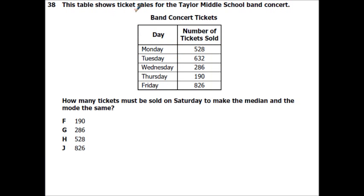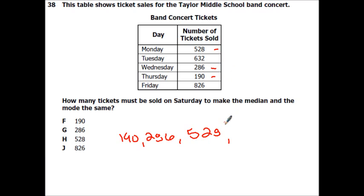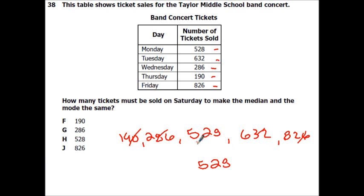This table shows ticket sales for Taylor Middle School band concert. How many tickets must be sold on Saturday to make the median and the mode the same? Right now the data ordered is: 190, 286, 528, 632, 826 — so the median is 528. There is no mode right now. So I need my median and my mode to both be 528, meaning Saturday's ticket sales must be 528.